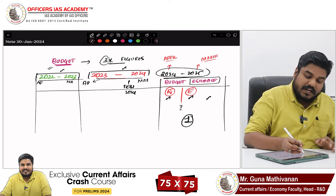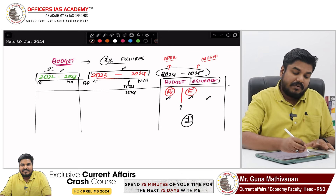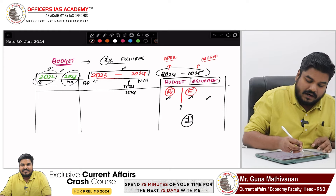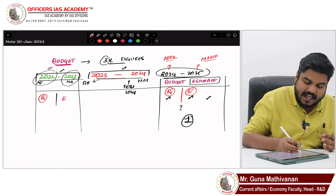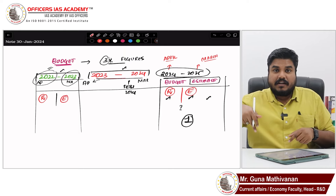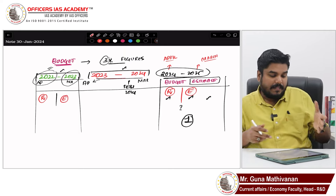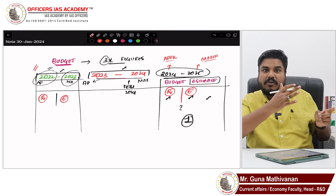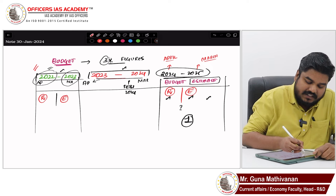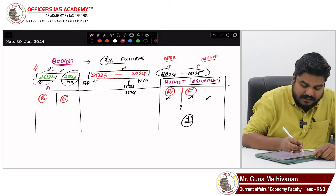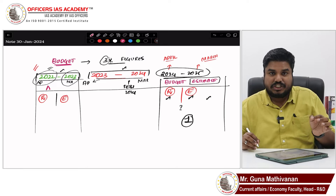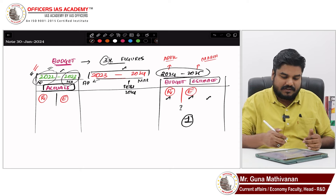The financial year 2022-23 is entirely over — from April 2022 to March 2023 — so we know the exact revenue and exact expenditure for that year. Because today we are in February 2024, and that year is completely finished, we have the actual figures. That is why the data for 2022-23 is referred to as 'Actuals' — actual revenue and actual expenditure.